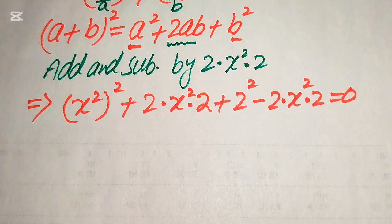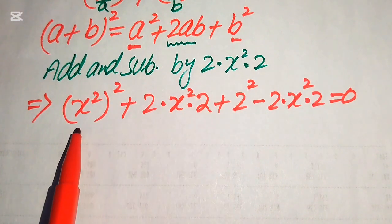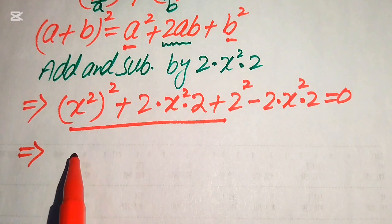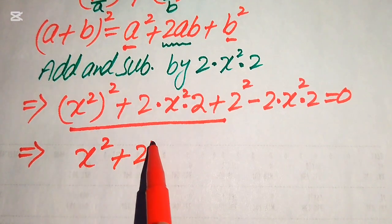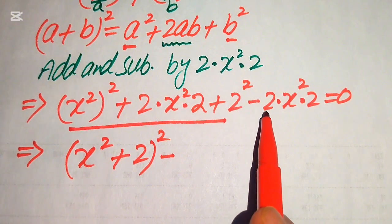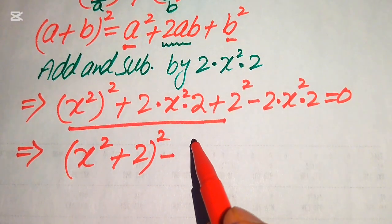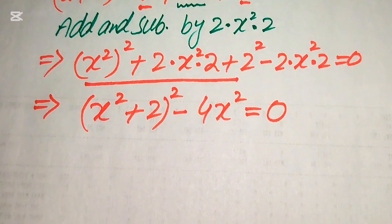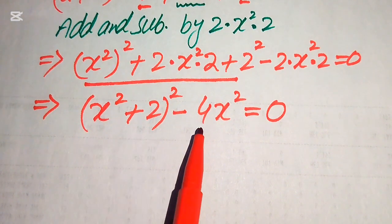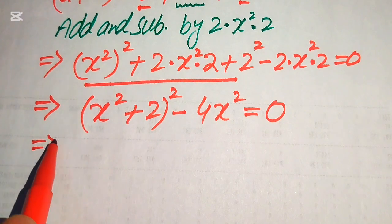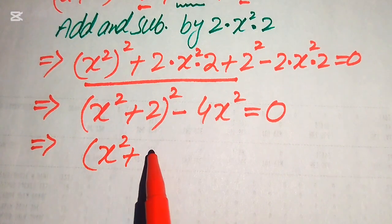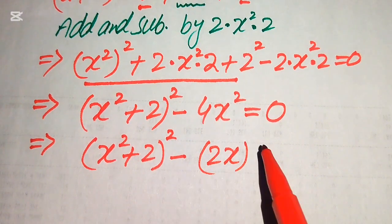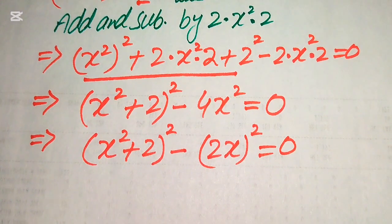We now have a² plus 2ab plus b², so combining these three terms we write (x² + 2)². Then we subtract: 2 times 2 becomes 4 times x squared, which we write as (2x)². So the equation becomes (x² + 2)² minus (2x)² equals 0.